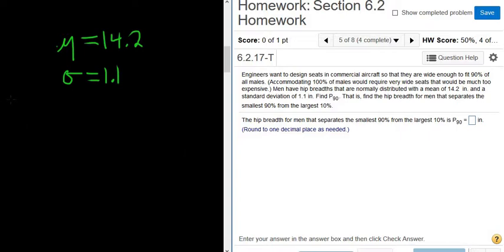Find P90. So P90 is the 90th percentile. That is, find the hip breadth for men that separates the smallest 90% from the largest 10%.